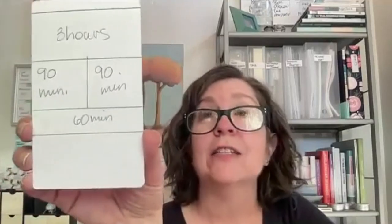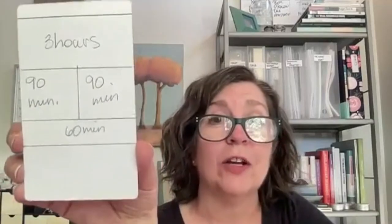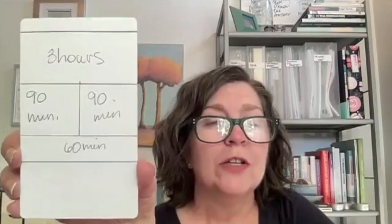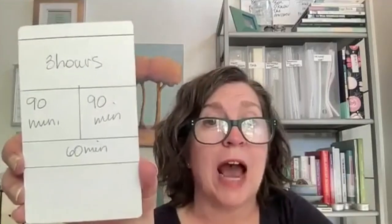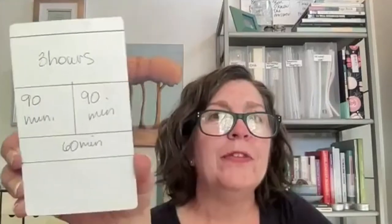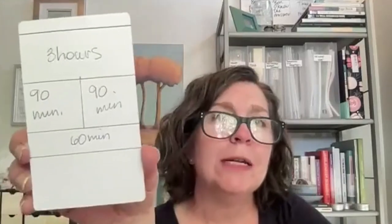I can take the tasks from the front side of the card and put them into the appropriate block. Typically the 60-minute section is my administrative tasks and the three-hour section is my client work. The two 90-minute sections tend to be my creative or project work, but it can look a little different. Sometimes I only want to do a four-hour day, and I'm just showing you with different materials so you can see how you can use up those office supplies.